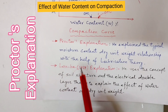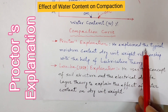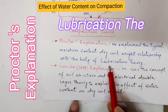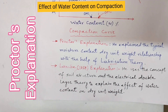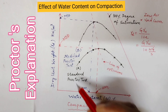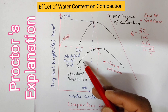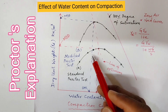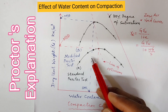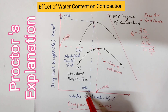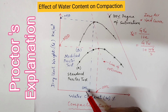As per Proctor's explanation, he explained the typical moisture content–dry unit weight relationship with the help of lubrication theory. At low water content, the soil is stiff and the soil grains offer more resistance to compaction. As the water content increases, the particles develop larger and larger water films around them, which tend to lubricate the particles and make them easier to move closer into a denser configuration.